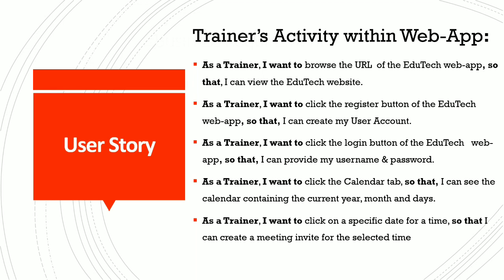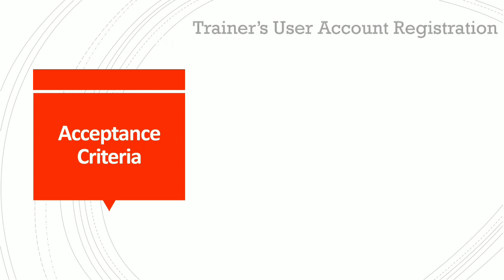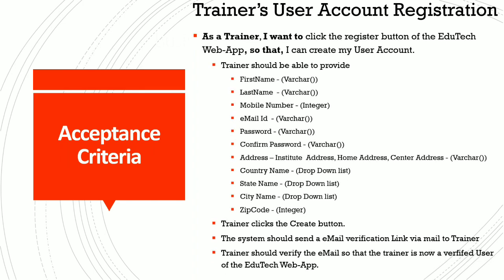Writing a user story is simple, but we also need to provide the necessary acceptance criteria. The acceptance criteria will help the developers to understand how to develop or code the particular module. In the interest of time, I took one of the user stories and wrote the necessary acceptance criteria.